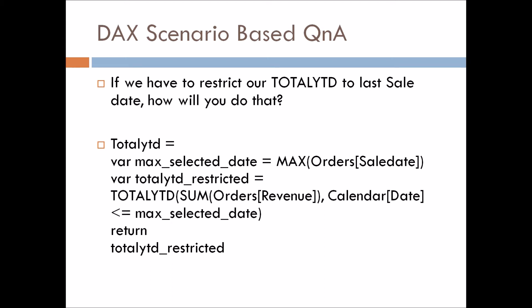For this we use variables. We create a variable 'Max Selected Date' which takes the maximum value of the sale date from the orders (fact) table. We then create another variable 'Total YTD Restricted' using the TOTALYTD function — sum of revenue — with a filter where the date is less than or equal to the Max Selected Date. The calendar table, which has continuous dates, gets restricted to the maximum sale date.